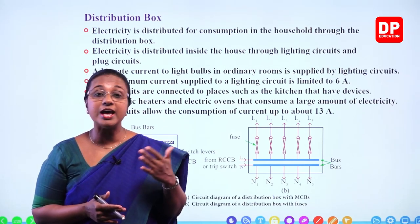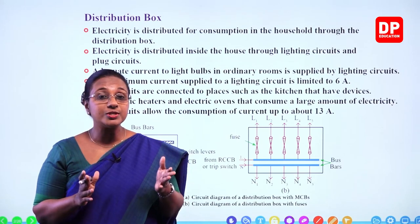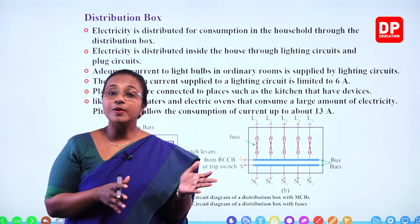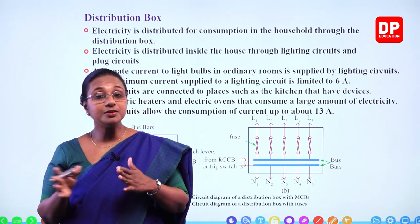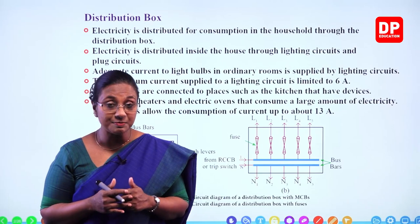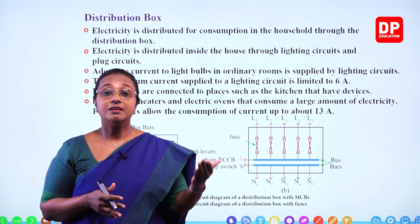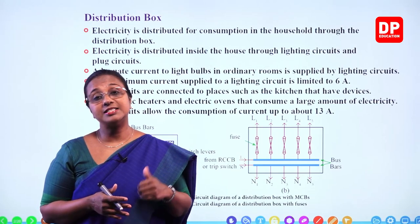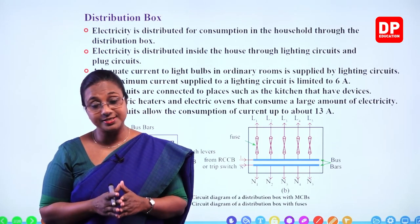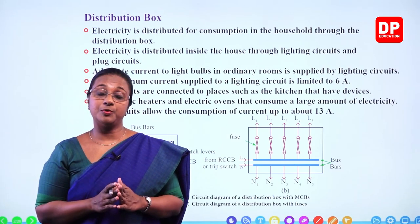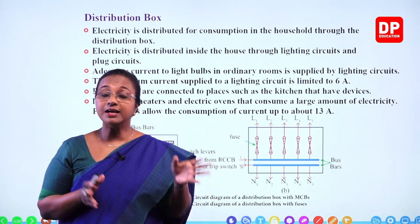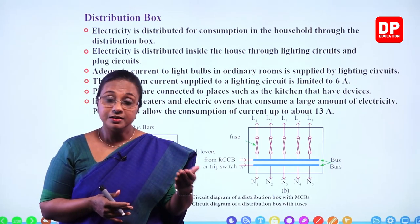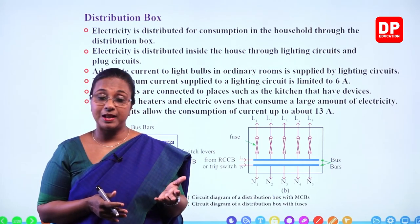The service fuse prevents current more than 40 amperes from entering the household circuit. If there is a current flow more than 40 amperes, the overload circuit breaker cuts off the power supply. Then from the overload circuit breaker, current flows into the electricity meter, where there is a recording of all the electric energy consumed by the household. Those two components — the overload circuit breaker and the electricity meter — belong to the electricity supplier.